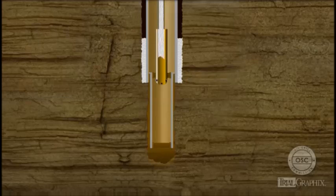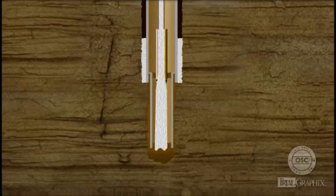The crew pumps cement down the drill string and through the casing. The cement flows out the bottom of the casing string and back up the annular space around the casing.